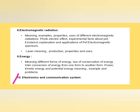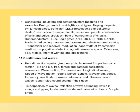Electronics and communication system: conductors, insulators, semiconductors — meaning and examples — energy bands in solids, forward and reverse bias, doping, dopants, PN junction diode, transistor, LED, photodiode, solar cells, Zener diode, construction of simple circuits, series and parallel combination of cells and bulbs, circuit symbols, superconductor, fuse, logic gates — AND, OR, NOT, NOR, NAND — radio broadcasting, receiver and transmitter, television broadcasting, modulation, bandwidth of transmission medium, propagation of electromagnetic waves in space, telephone, fax, mobile internet and applications.